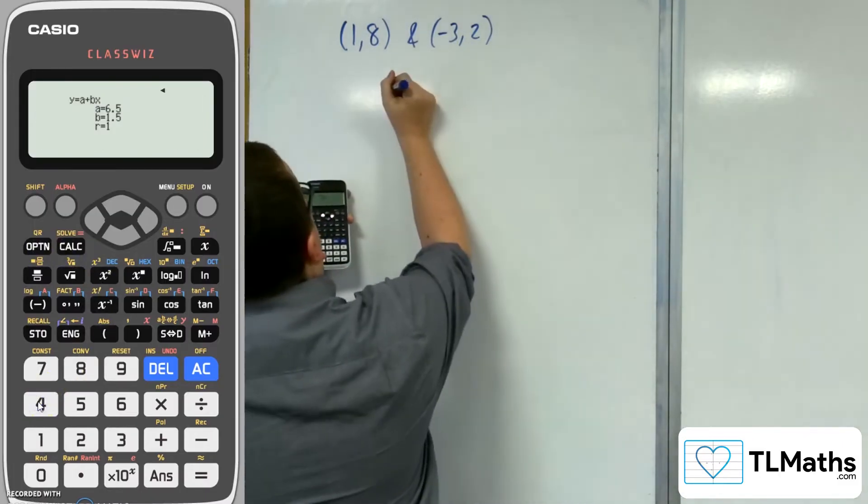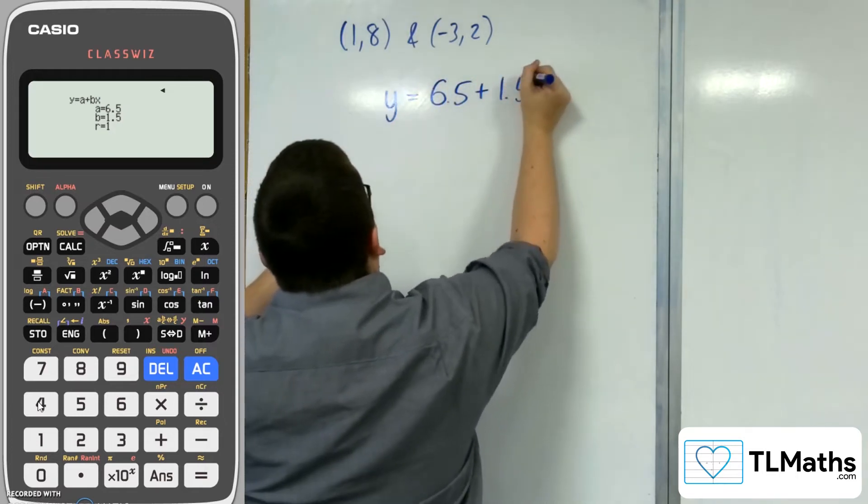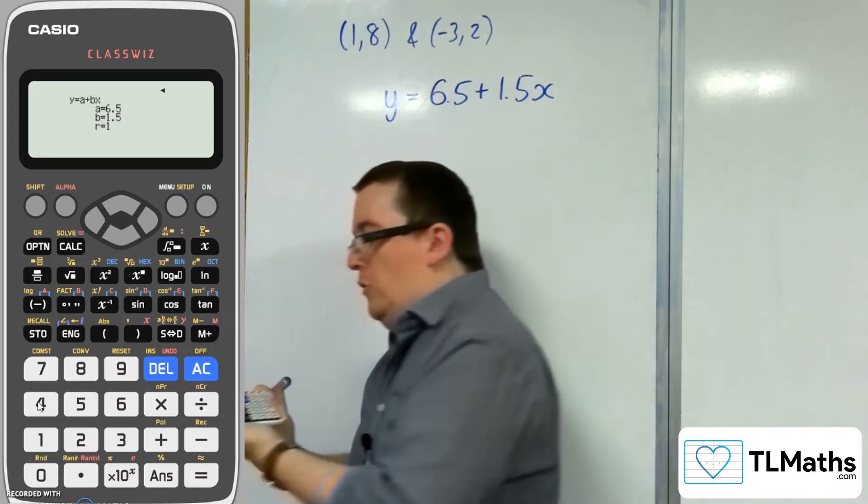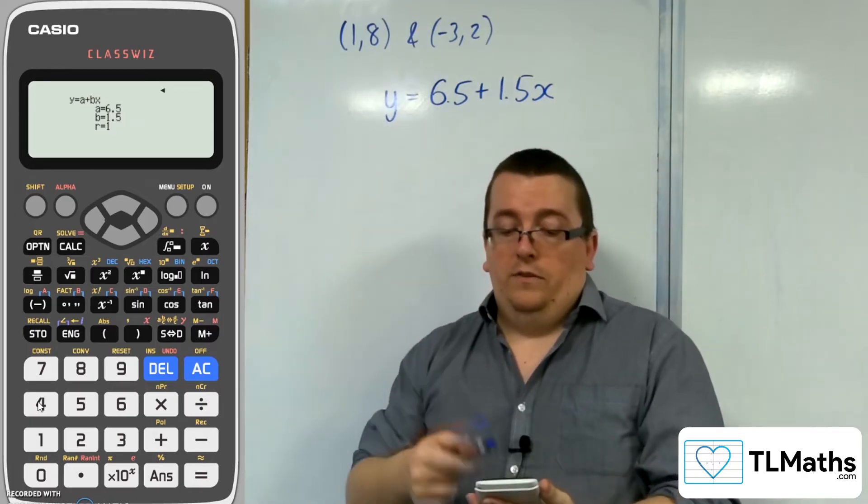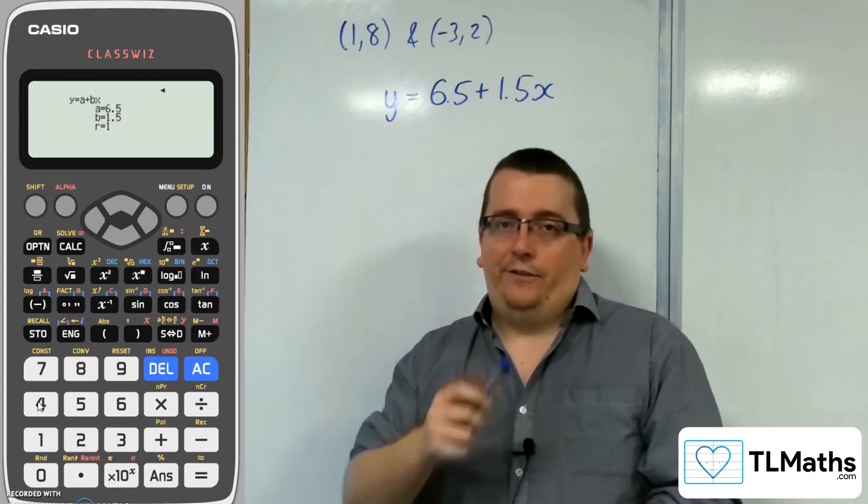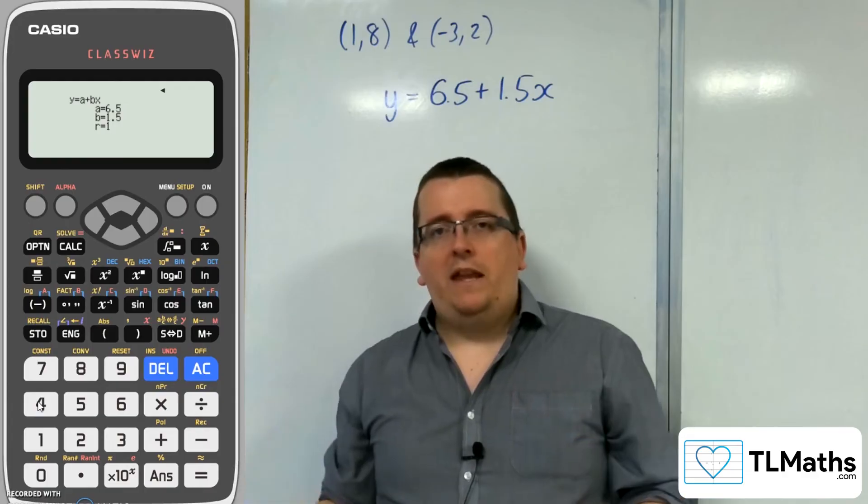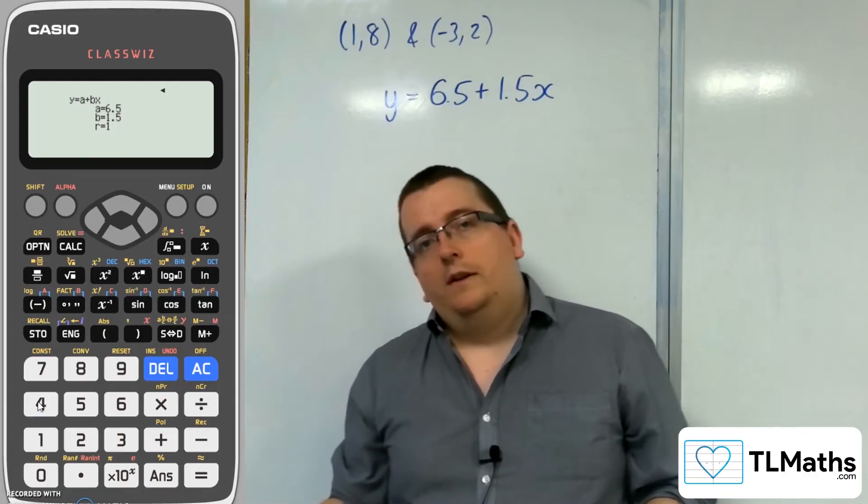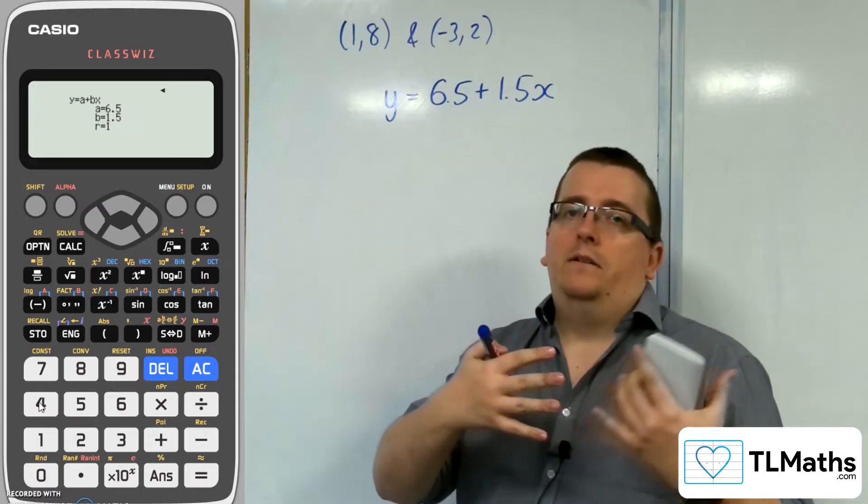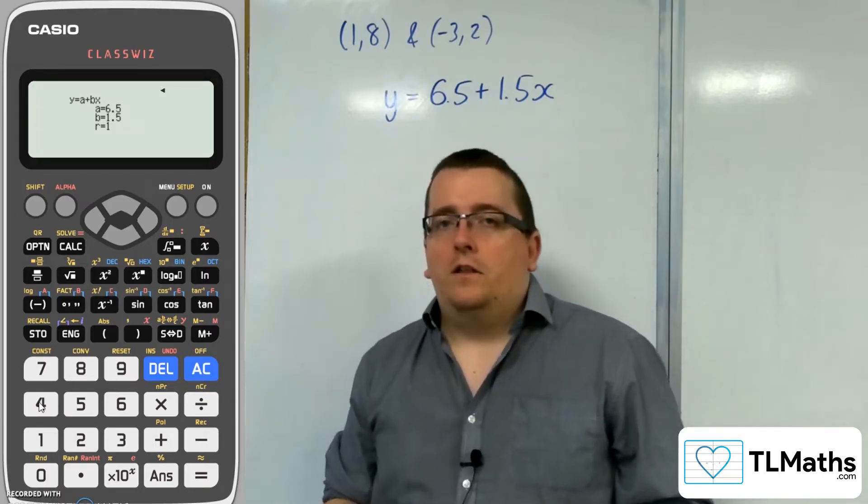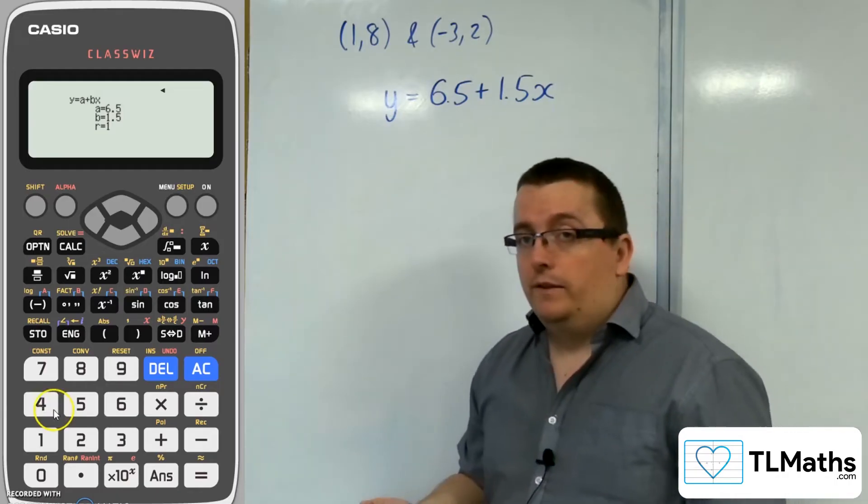Once you've got there, you want to press option and then number 4 for regression calculation. You will find you've got the a and the b value. So you've got y = a + bx. The only problem that you may have to deal with is that sometimes these numbers won't be in exact form. So maybe you'll only use it as a checking tool if the gradient was 1/9 or 3/13 or something like that, when you don't recognize what the decimal is.